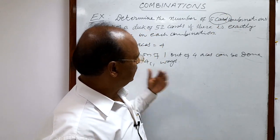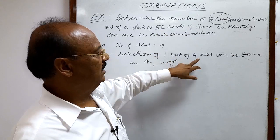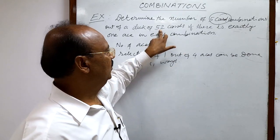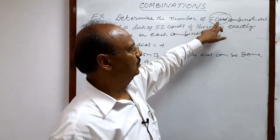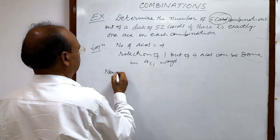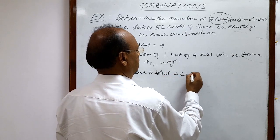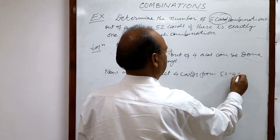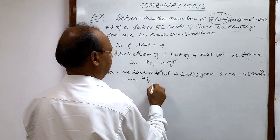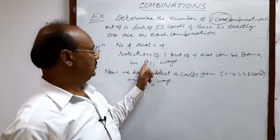In total we have to select five cards; one has been selected, so the rest four cards have to be selected from 52 minus 4 cards. There are four aces total and one ace has been selected from them, so the remaining number of cards is 52 minus 4, which is 48. Out of these 48 cards we have to select four cards.